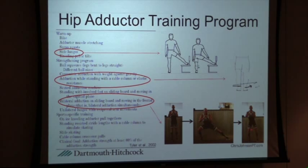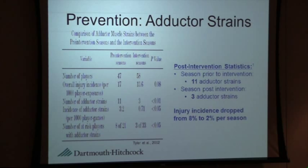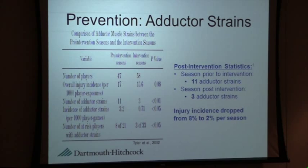They conducted this study after the team reported a high number of adductor strains. Prior to implementing the exercise protocol, they had 11 adductor strains the season before. After implementing the protocol, they only had 3. The incidence dropped from 8% to 2% per season — a significant reduction in games and practices lost for a professional hockey team.